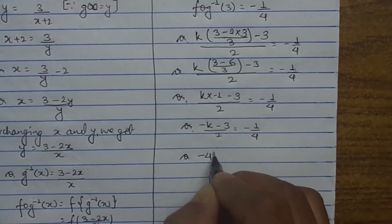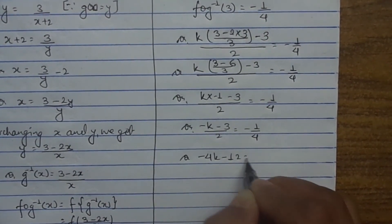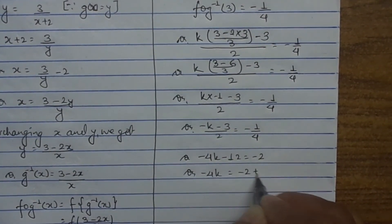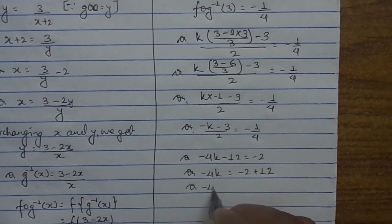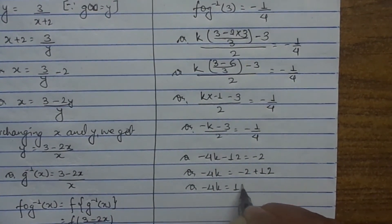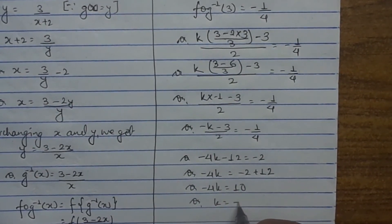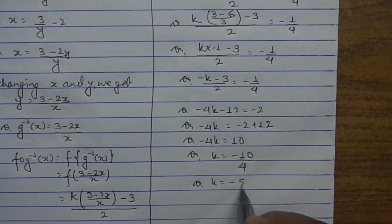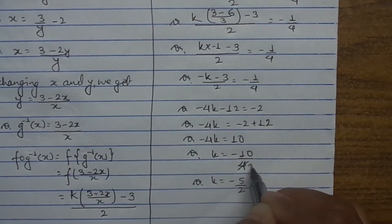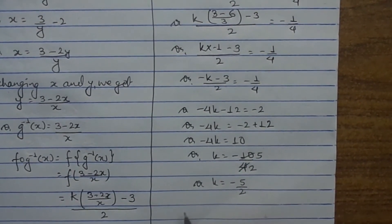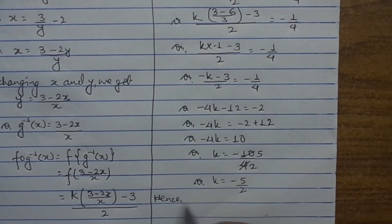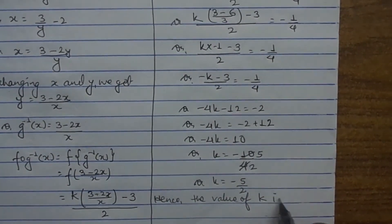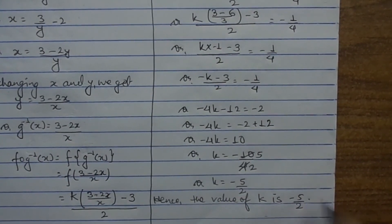Cross-multiplying gives 4k minus 12 equals minus 2, so minus 4k equals minus 2 plus 12, which means minus 4k equals 10. Therefore k equals minus 10 divided by 4, which simplifies to k equals minus 5 divided by 2. Hence the value of k is minus 5 upon 2.